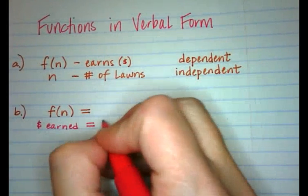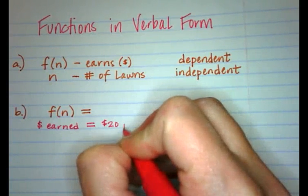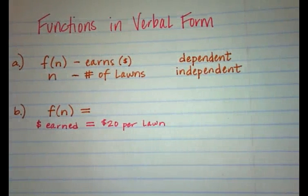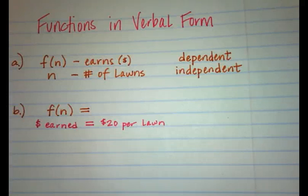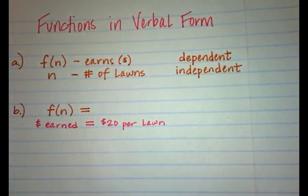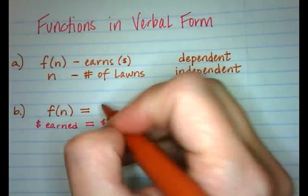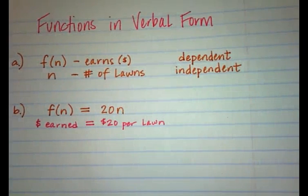If we think about it, he gets twenty dollars per lawn. If he mows one lawn, he'll make twenty dollars. If he mows two lawns, he'll make forty dollars. If he mows three lawns, he'll make sixty dollars, and so on. n is the number of lawns, so if we take 20 and multiply it by the number of lawns, that will give us how much money he earns.